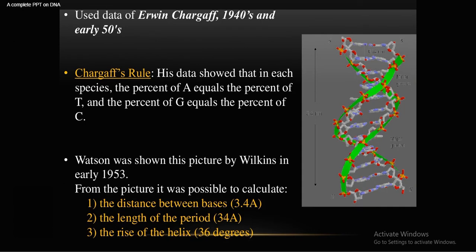They used data from Edwin Chargaff from the 1940s and early 1950s. Chargaff's rule showed that in each species, the percentage of adenine always equals thymine, while guanine always equals cytosine.